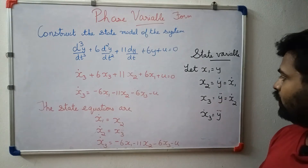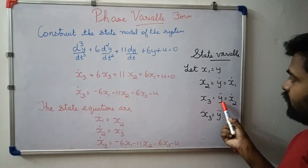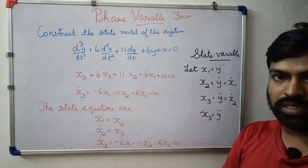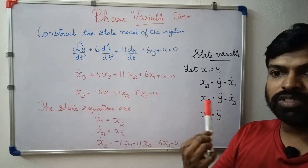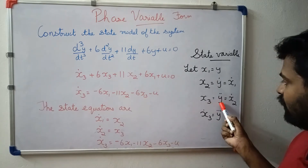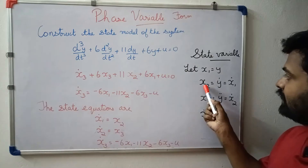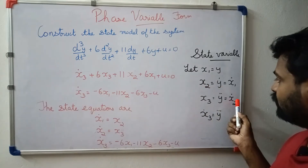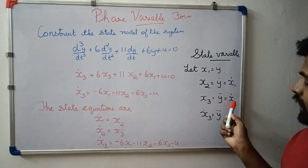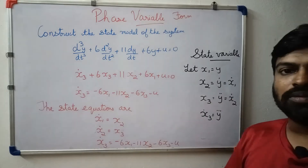y double dot corresponds to x3, and x2 dot. So x3 is equal to x2 dot.